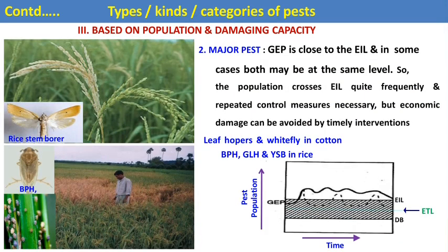The major pest causes more than 10% yield losses in the field. The General Equilibrium Position is close to the EIL, and in some cases both may be at the same level, so the population crosses the EIL quite frequently and repeated control measures are necessary. However, economic damage can be avoided by timely intervention. Examples are rice stem borer, brown planthopper on rice, whitefly in cotton, and leafhoppers in cotton.